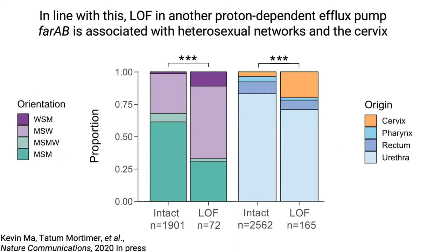This led to the hypothesis that other similarly-acting pumps would show the same characteristics. Indeed, another pump in gonococcus — farAB, a proton-substrate antiporter type that pumps out fatty acids — has a loss-of-function version: loss of function in farA that is also over-represented in heterosexual networks and in the cervix. This lends credence to the hypothesis that something in that cervical environment is interacting with this type of pump, potentially through intracellular acidification. This is now being validated experimentally.